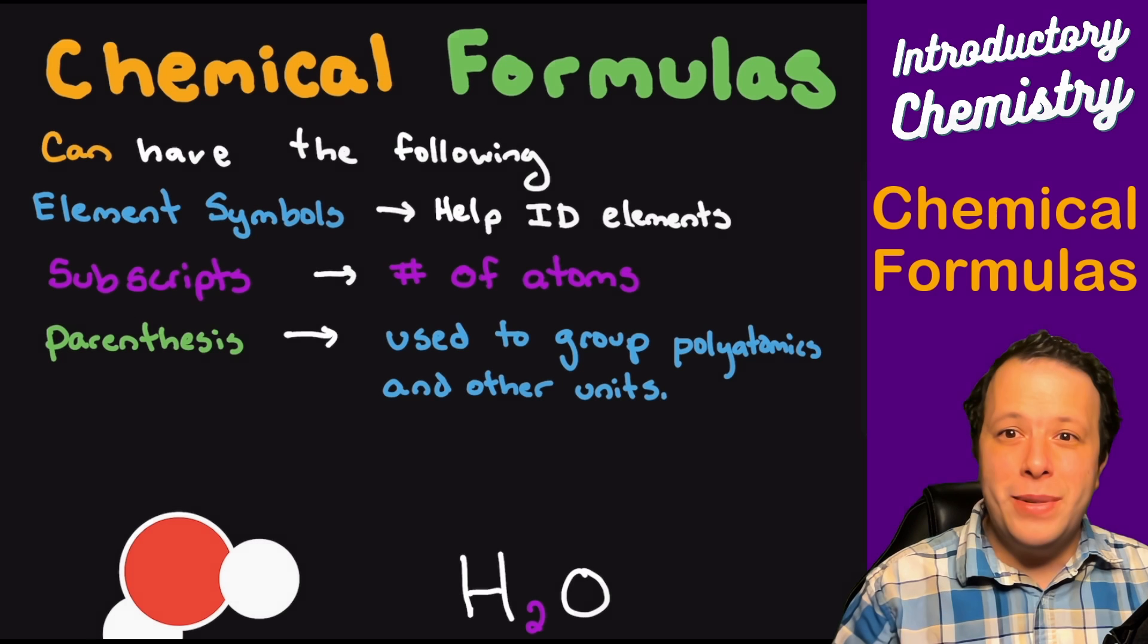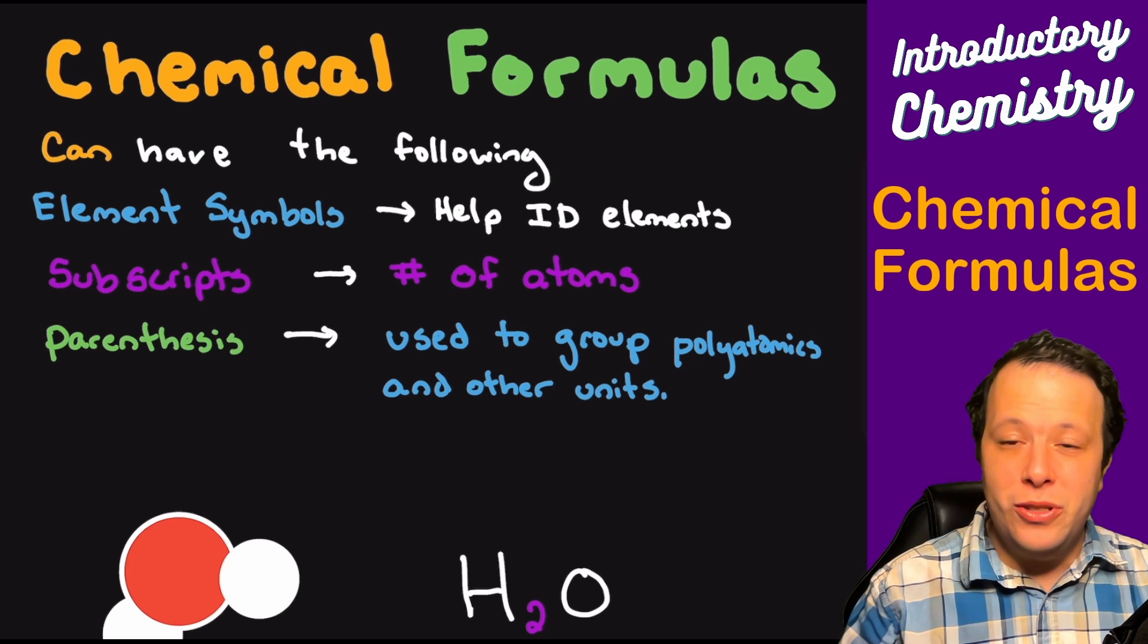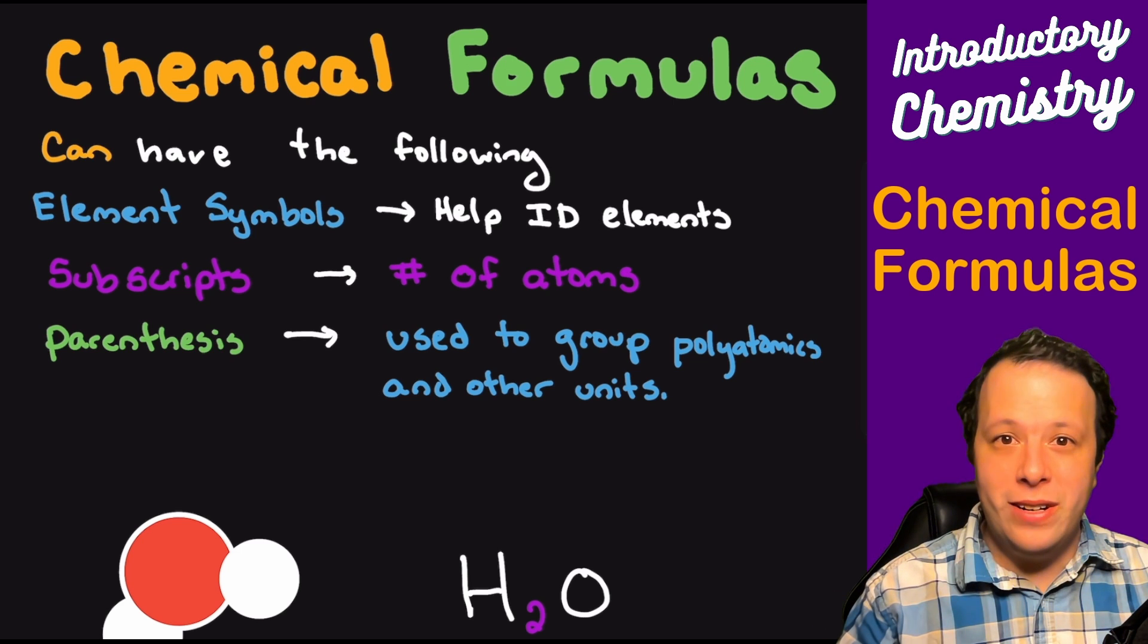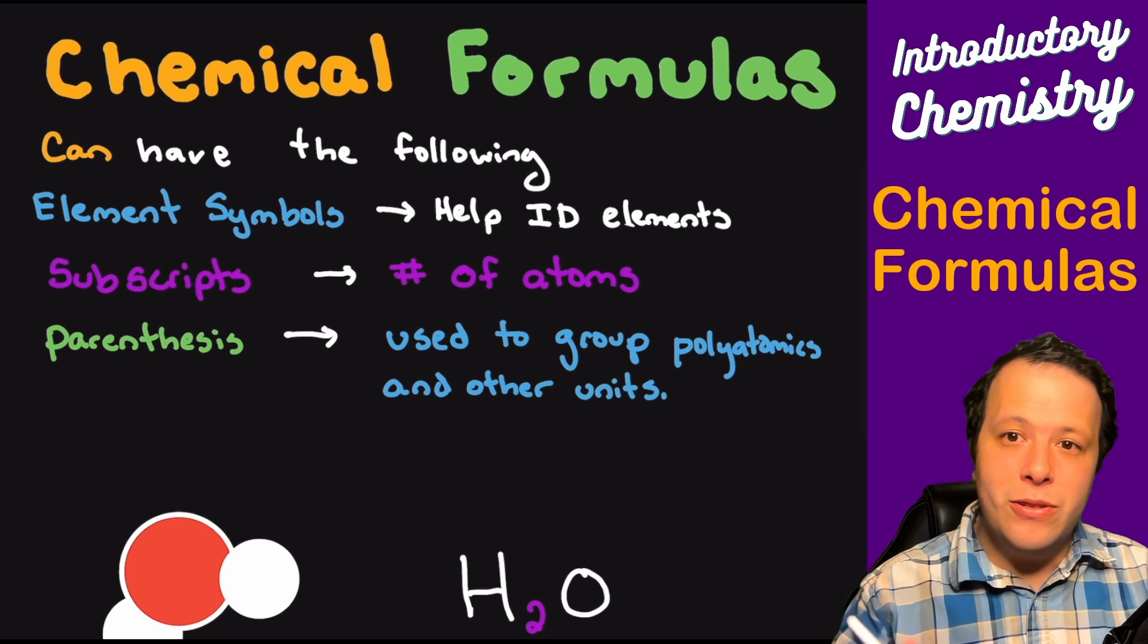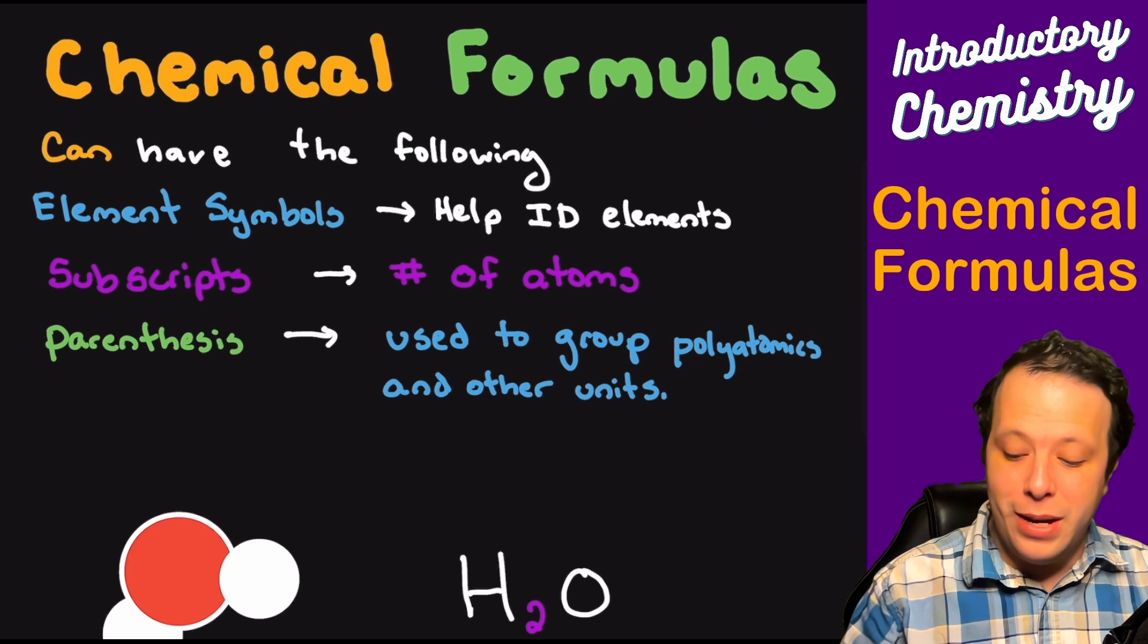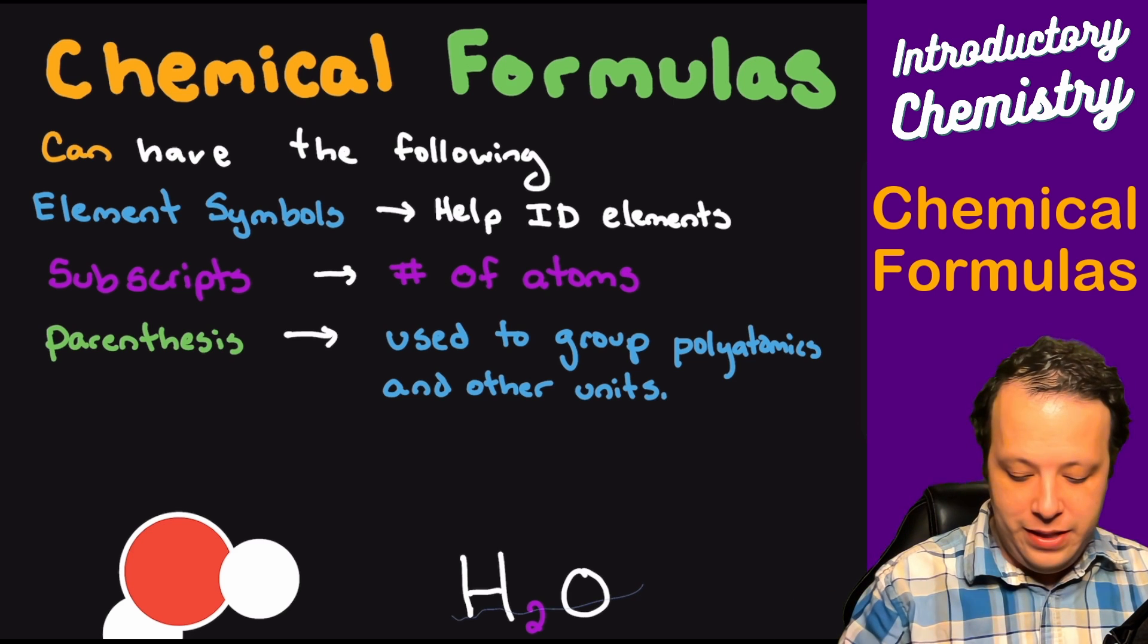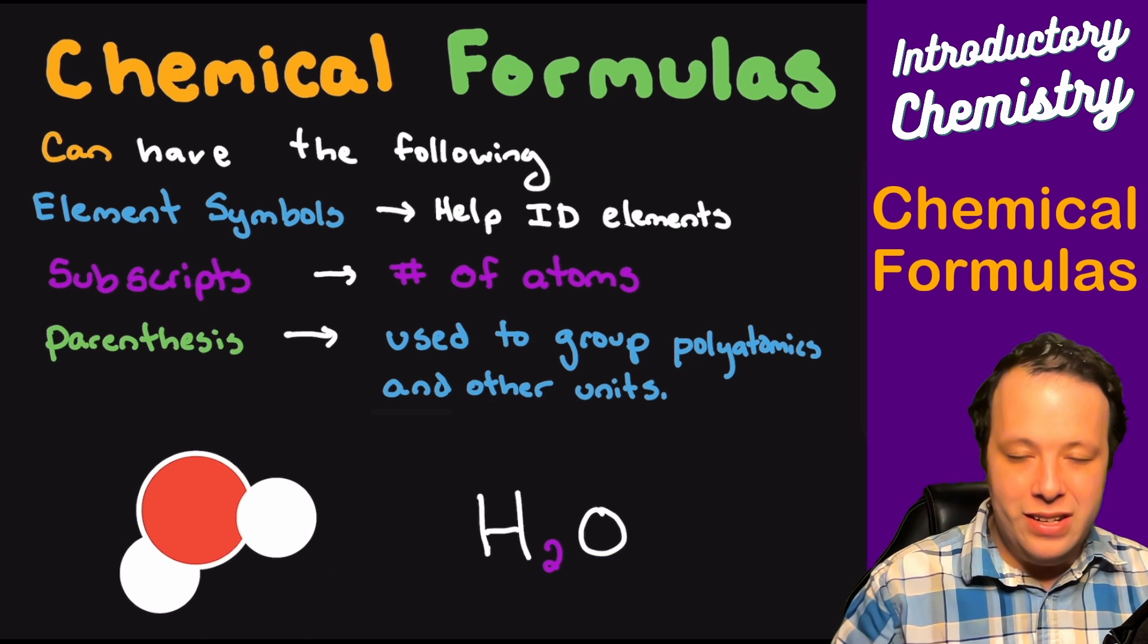The first thing about chemical formulas is that they can have the following things. The first one is that they will have the element symbols that you can find on your periodic table. Now, this is one of the reasons it's very important that you start memorizing your periodic table. It makes it easier to do your general chemistry course. Even some classes don't even give you the complete information; it fully depends on who your teacher is.